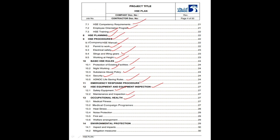Occupational Health. In this section, detailed information will be given about medical fitness, medical campaign programs, heat stress, noise protection, first aid, and welfare arrangements.